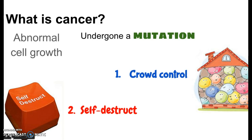When cancer occurs, the mutation takes out both the crowd control and the self-destruct — those two things no longer function. The cells multiply out of control; they don't realize they're invading tissue, so they just keep multiplying. And even though they don't work properly, their self-destruct sequence no longer works, so they don't kill themselves like most cells do when they see they're not properly functioning. Both the crowd control and the self-destruct don't work on cancer cells — that's what makes them cancer.